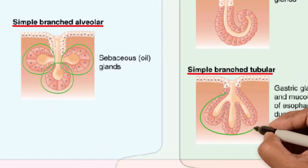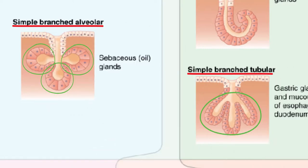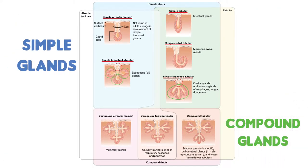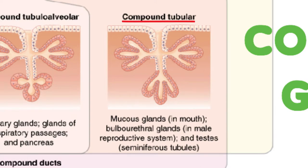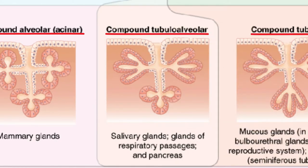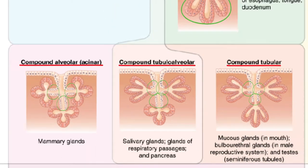Notice that even though some have branched secretory portions, all simple glands have only one duct with no branches — therefore they are all simple glands. Compound glands, on the other hand, can be compound tubular, compound acinar (also known as compound alveolar), or compound tubuloacinar — a mixture of the previous two. Compound glands have multiple branched ducts, hence the name compound.